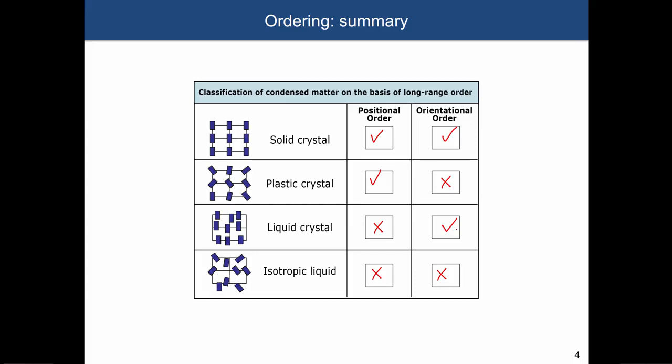Let me remind you about what we learned last time. Throughout the semester we learned about amorphous materials and crystalline materials and the difference between them. In crystalline materials there is long-range translational order and orientational symmetry of individual molecules, and both of these disappear in liquid crystalline materials.